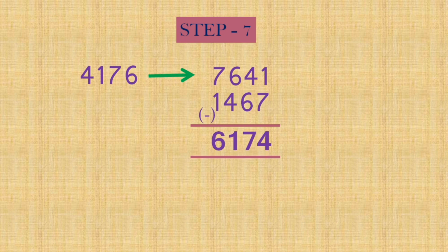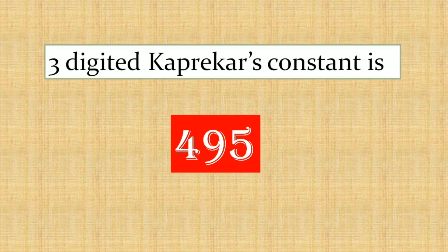What happens if I again continue it? I will be there itself, 6174, 6174. You can try it out. This is a famous discovery of Dr. Kaprekar. Kaprekar's constant. For three digits, what is that? 495. The same process, you take the biggest number, smallest number, subtract them, within 7 steps you reach 495. This is the three digit Kaprekar's constant.